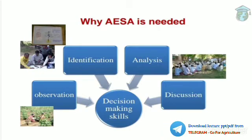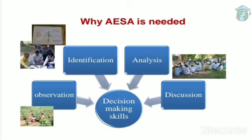After observation comes identification. Identification can be regarding the crop or the pest. For the crop, you get to know what kind of crop you are growing and whether your crop is healthy or unhealthy. Regarding the pest, identification means knowing which type of pest is infecting your crop. This is identification.